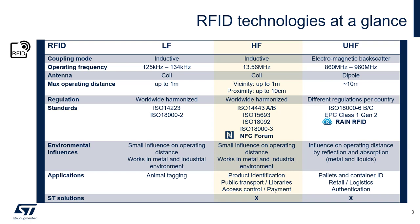UHF RFID is based upon electromagnetic backscatter, so this is more akin to radar. The operating frequency is 860 MHz to 960 MHz, and the antenna is typically a dipole. The max operating distance for these systems is typically about 10 meters. Regulation differs from country to country, which is why you have the wide range of operating frequency. It's based upon an ISO standard and also EPC class 1 Gen 2. Its main functions are typically inventory control, pallet and container ID, retail logistics, and some authentication.